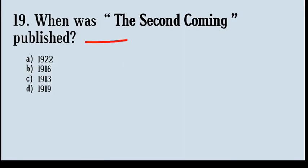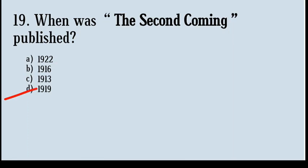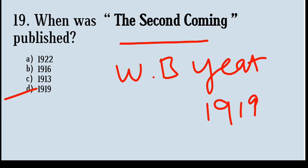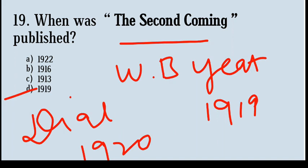Next question. When was 'The Second Coming' published? Options: 1922, 1916, 1913, 1919. Correct answer: option number D, 1919. 'The Second Coming' is a poem written by W.B. Yeats in 1919, first printed in The Dial in November 1920, and afterwards included in his 1921 collection of verses, Michael Robartes and the Dancer.